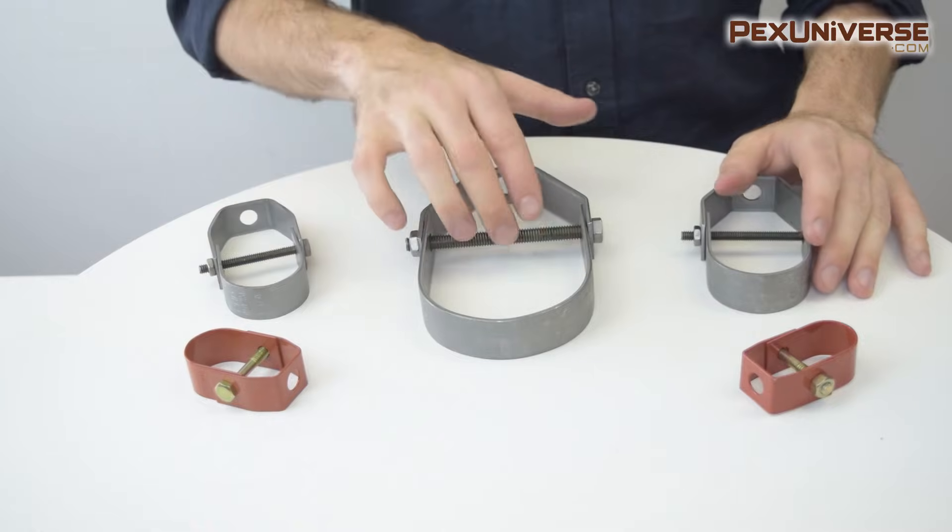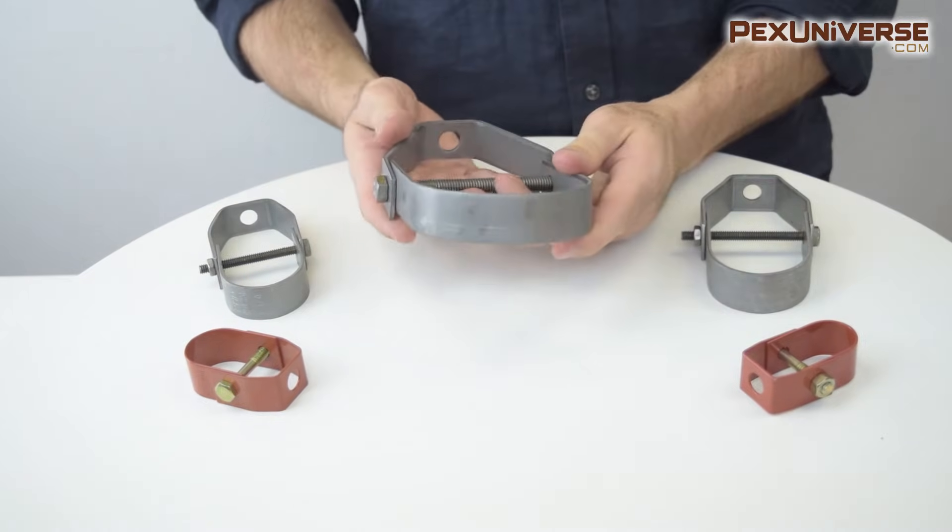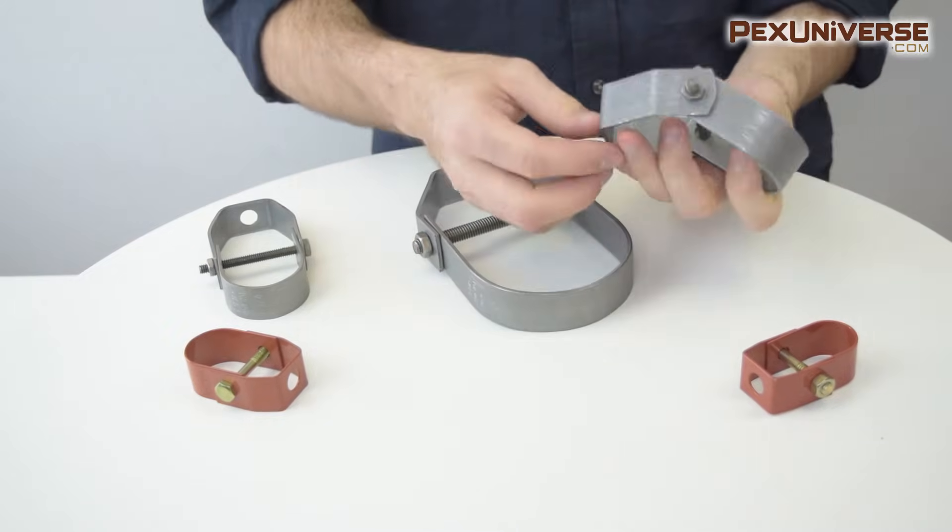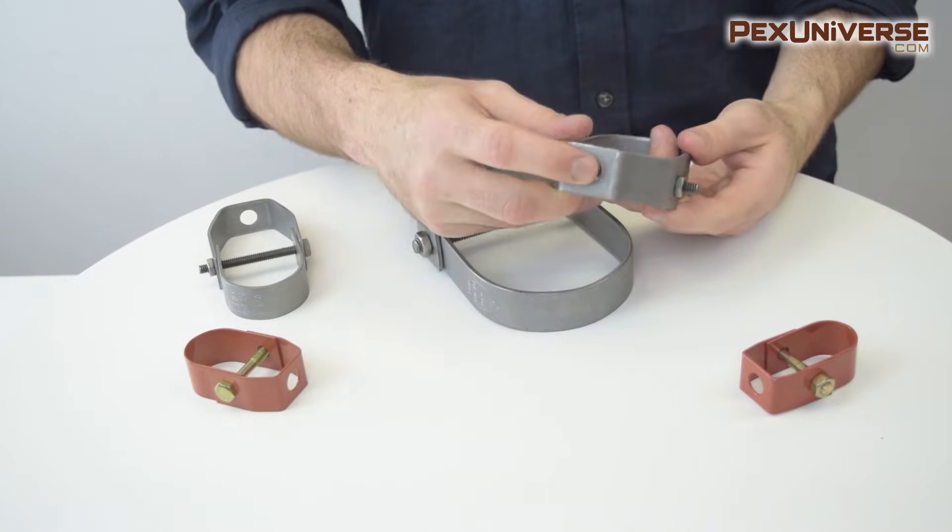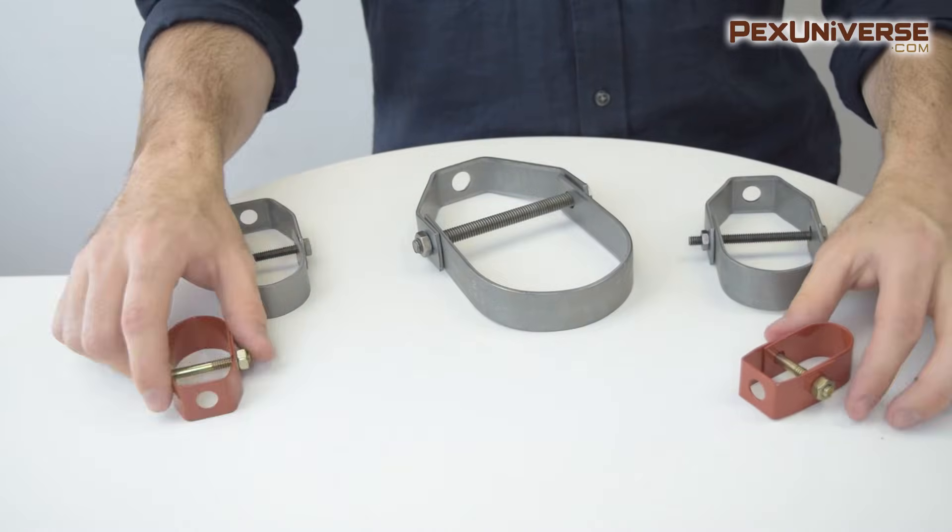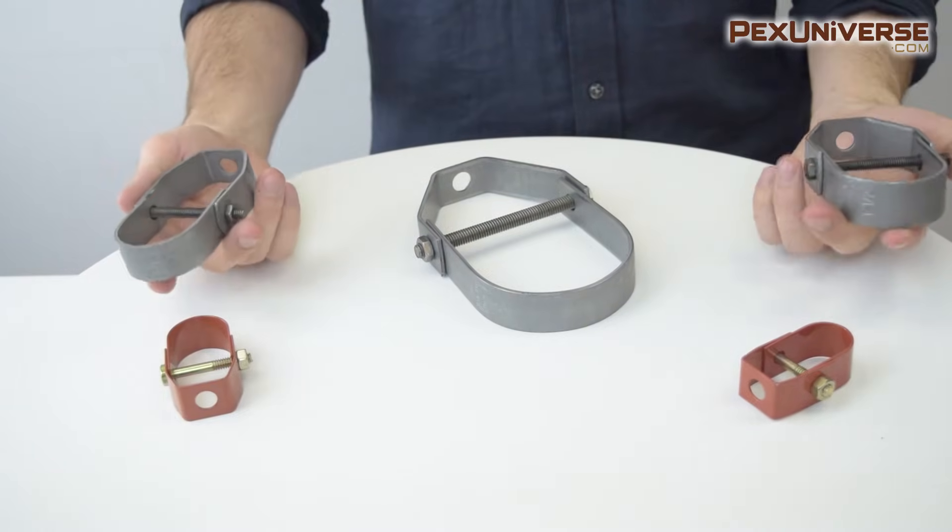This is the clevis hanger and it's used to support horizontal pipe runs most commonly near the ceiling. These are used in combination with threaded rod and beam clamps or ceiling plates. Various options are available for copper, black iron or cast iron, and PVC pipes.